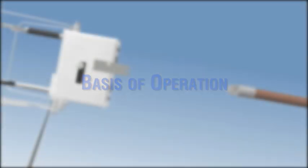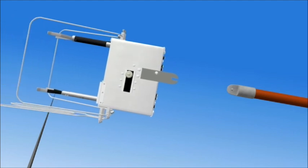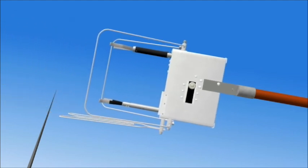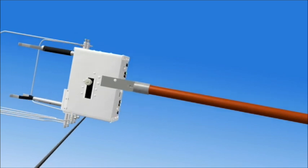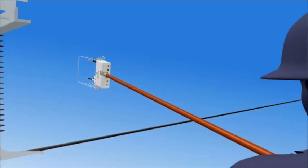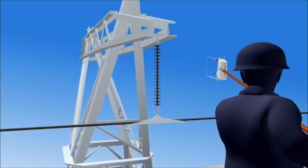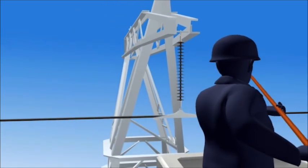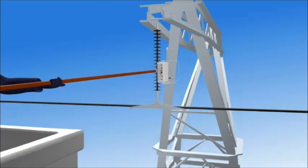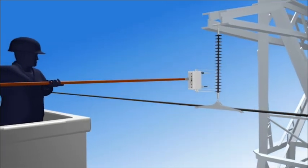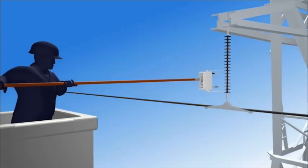Basis of operation: Attached to the end of a hot stick with a universal adapter, the polymer insulator tester is used to assess the condition of between 5 and 6 inches of an NCI at a time. The operator places the two spring-loaded V-probes against the sheath section of the insulator and applies pressure evenly.